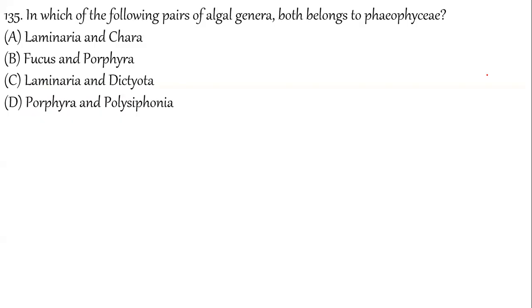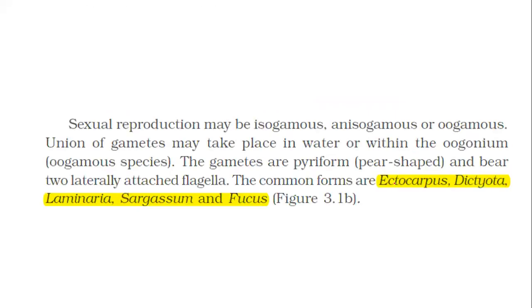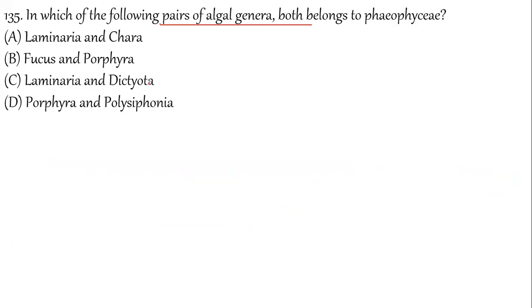Question 135: Which pair of algal genera belongs to Phaeophyta? Phaeophyta examples are: Ectocarpus, Dictyota, Laminaria, Sargassum, and Fucus. From the options, Laminaria and Dictyota are both Phaeophyta members — option C is the correct answer. Moving on to Section B of botany.